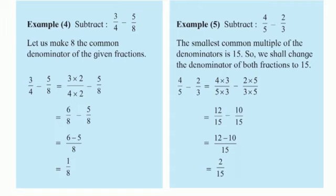Let us make 8 the common denominator of the given fractions. 8 is divisible by 4 because 4 twos are 8. So 3 upon 4 minus 5 upon 8 equals 3 multiplied by 2 upon 4 multiplied by 2 minus 5 upon 8. If you multiply 2 in the denominator, you have to multiply the same number in the numerator also. So 3 twos are 6 upon 4 twos are 8, minus 5 upon 8. Now you got the equivalent fractions with the common denominator 8.